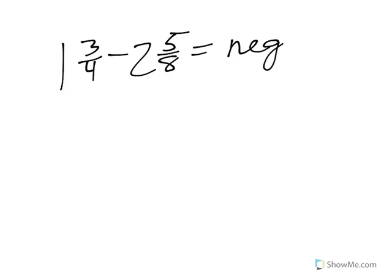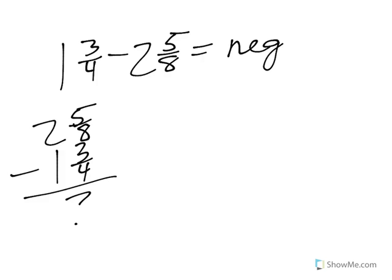One more example with some fractions. Let's say I had 1 and 3 fourths minus 2 and 5 eighths. Once again, I'm taking away more than I have, and so the answer is negative. But I have to see how much bigger is 2 and 5 eighths than 1 and 3 quarters. What is the difference between 2 and 5 eighths and 1 and 3 quarters?